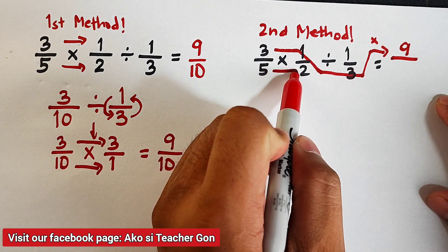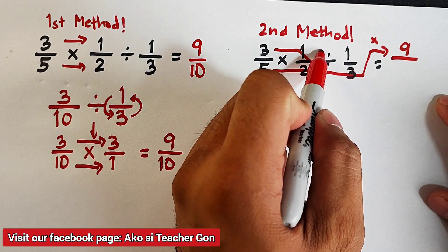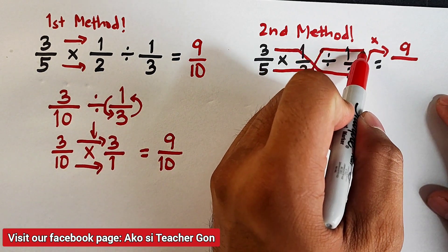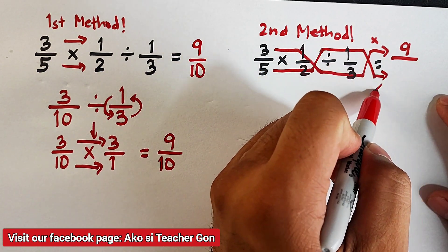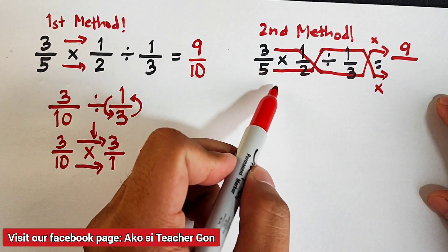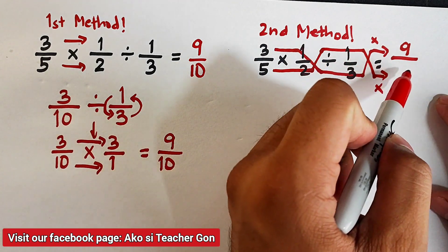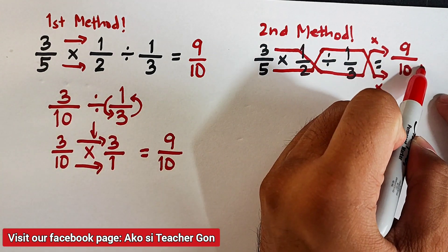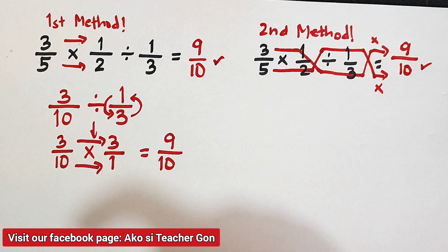This one, go up, go down, multiply all the numbers. 5 times 2 times 1, that is equal to 10. As you can see, we have the same answer using different methods.